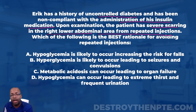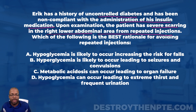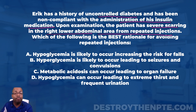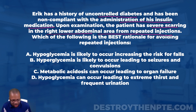The question asks: which of the following is the best rationale for avoiding repeated injections — why is injecting the same spot a bad thing? Answer A says hypoglycemia is likely to occur increasing the risk for falls. B says hyperglycemia is likely to occur leading to seizures and convulsions. C is metabolic acidosis can occur leading to organ failure. D is hypoglycemia can occur leading to extreme thirst and frequent urination.